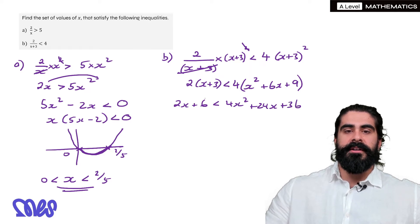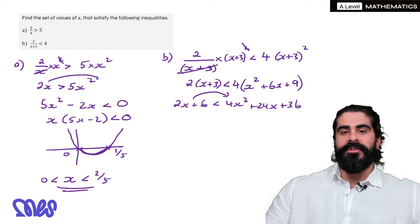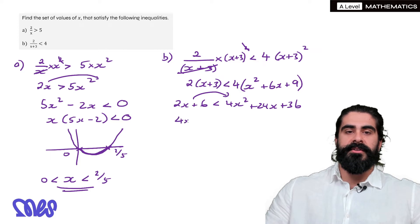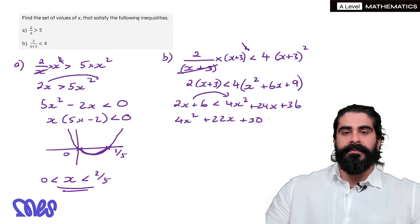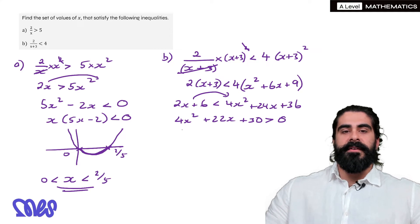Then we're going to move everything to this side, and that's on the greater than side, so we'd get 4x squared, 24x minus 2x is 22x, 36 minus 6 is 30, greater than 0. Now we're going to divide everything by 2.